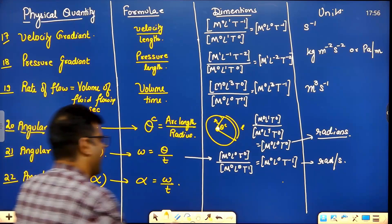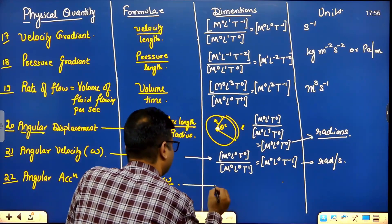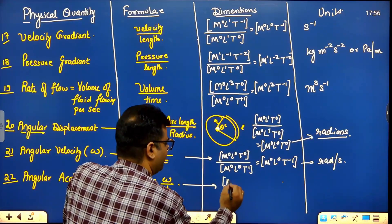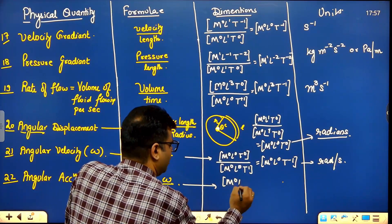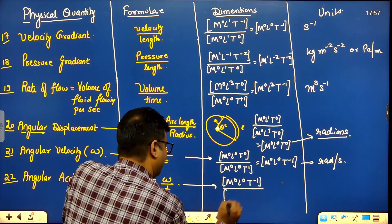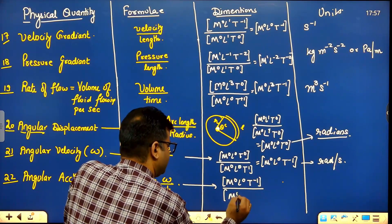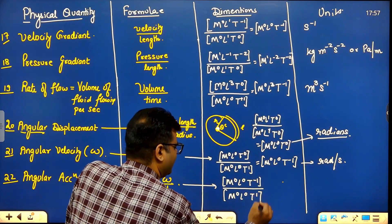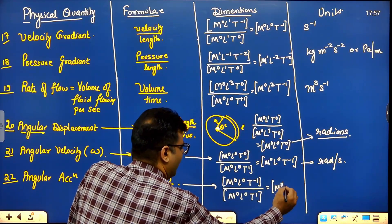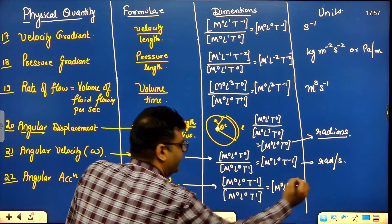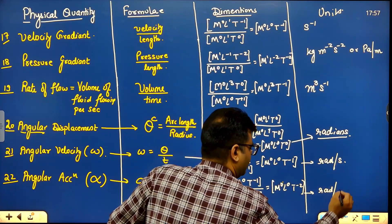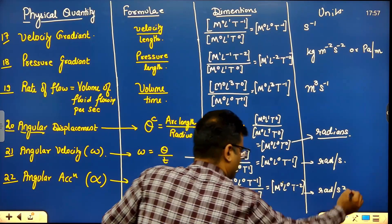Angular acceleration = omega upon time. Omega is M⁰L⁰T⁻¹, time is M⁰L⁰T¹. Combining: M⁰L⁰T⁻². Units are radian per second squared (rad/s²).